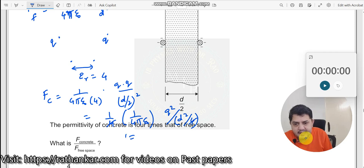So I get F concrete is equal to 1 by 4 pi epsilon naught into Q square divided by d square. This is what I get here. Now I want F concrete by F free space.